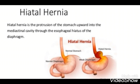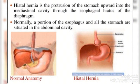Normally, the portion of the esophagus and the stomach are situated in the abdominal cavity. But in case of hiatal hernia, the protrusion of the stomach occurs in an upward direction into the mediastinal cavity through the esophageal hiatus of the diaphragm.